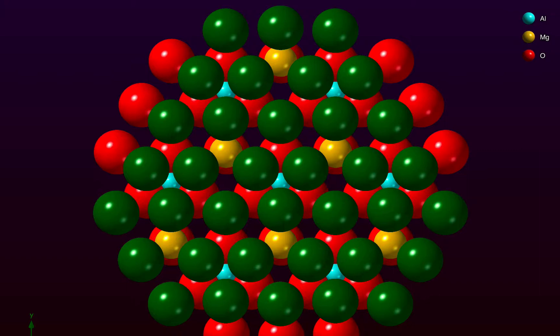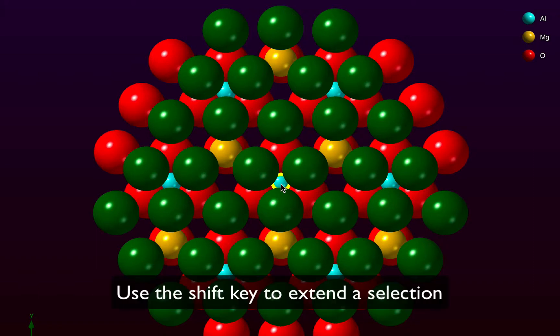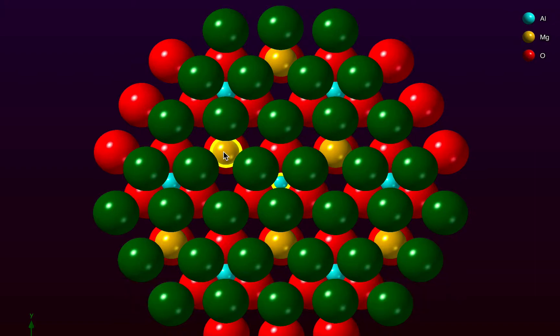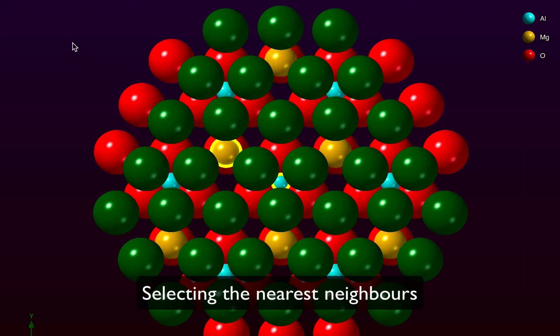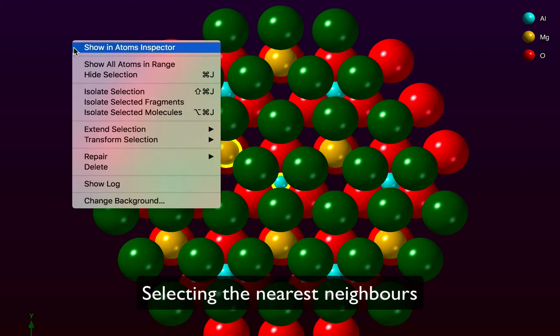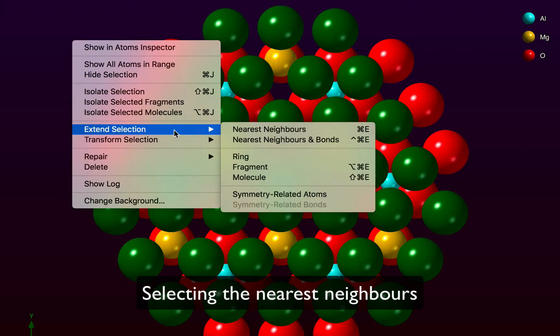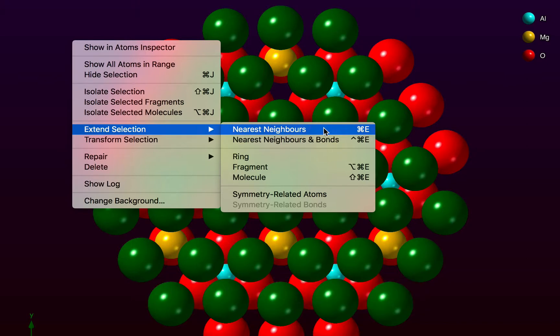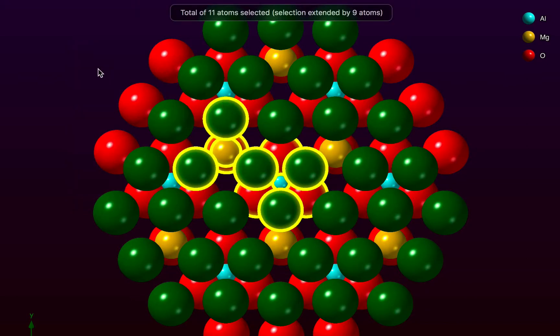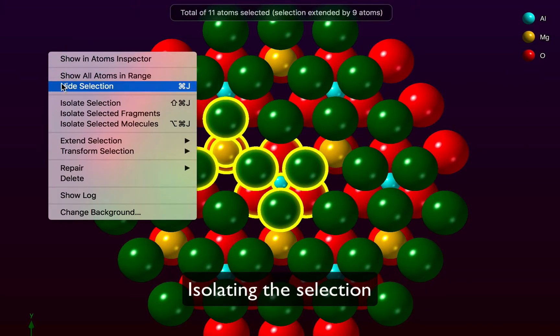So what I can do here is click on one of the aluminium atoms and then hold the shift key down and click on a magnesium atom. I want to select their nearest neighbours and I can do that by right clicking and telling the program to extend the selection to the nearest neighbours and now we can isolate that selection.